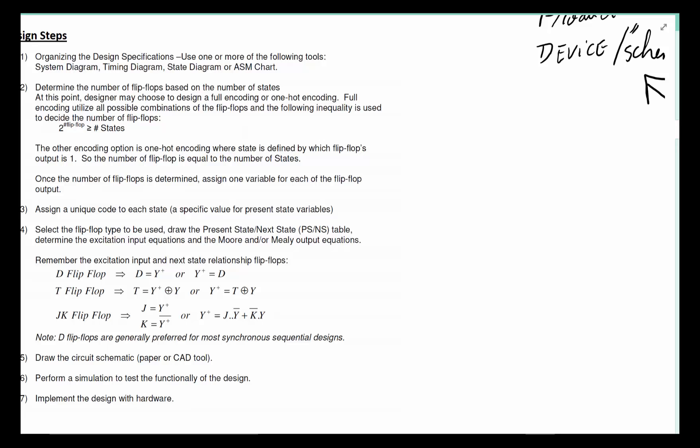The easiest and most complete place to go from description of a design requirement for us would be, after we've done the system diagram, which is basically what are the inputs and what are the outputs of this device.